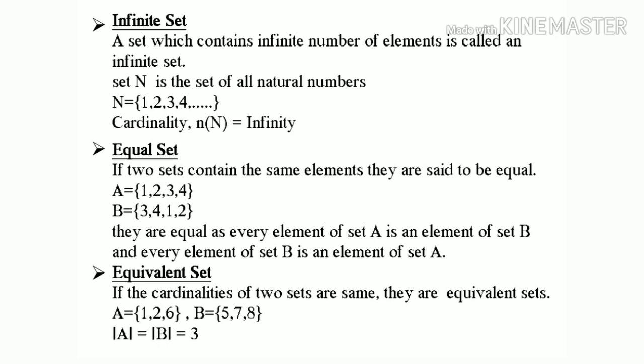Next one is equal set. If two sets contain the same elements, they are said to be equal. A equal to {1, 2, 3, 4}, B equal to {3, 4, 1, 2}. They are equal as every element of set A is an element of set B, and every element of set B is an element of set A.